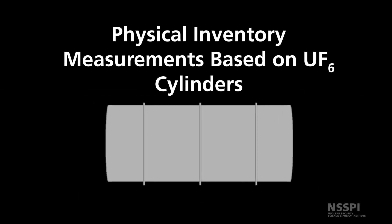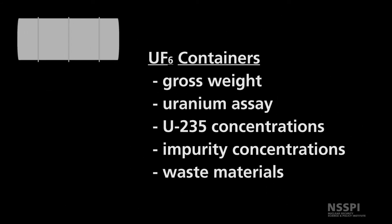Whenever measurements can be taken, the majority will involve UF6 cylinders. The measurement systems used to determine the physical inventory include gross weight measurements, uranium assay, uranium-235 concentration, impurity concentrations, and measurements of waste materials.